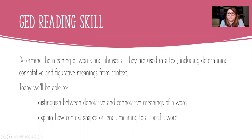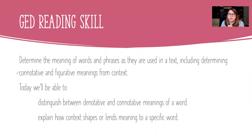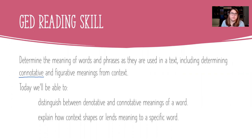The reason we are working on author's point of view today is because it matches a GED reading skill — a skill we need to be better readers for the GED test. That skill helps us determine the meaning of a word or phrase as seen in a text, including determining connotative and figurative meanings from context. By the end of today's lesson, we will be able to distinguish between denotative and connotative meanings of a word, and explain how context shapes meaning. Those are our goals.